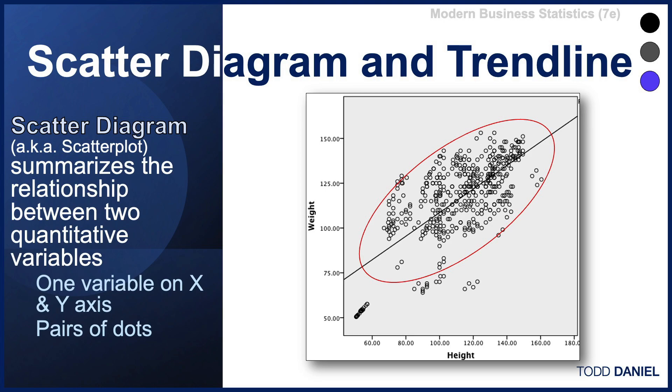In this example, we're plotting height and weight. Each person is measured for both their height and their weight, and the combination of those two numbers creates a dot on our scatter diagram. That collection of dots contains a pattern, which we can further clarify with something called a trend line.